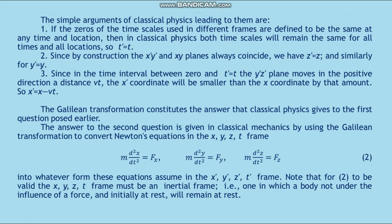Second, since by construction the x-asterisk, y-asterisk and x-y planes always coincide, we have z-asterisk equals z, and similarly y-asterisk equals y. Third, since in the time interval between 0 and t-asterisk equals t, the y-asterisk z-asterisk plane moves in the positive direction a distance v multiplied by t, the x-asterisk coordinate will be smaller than the x-coordinate by that amount. So x-asterisk equals x minus v multiplied by t. The Galilean transformation constitutes the answer that classical physics gives to the first question posed earlier.